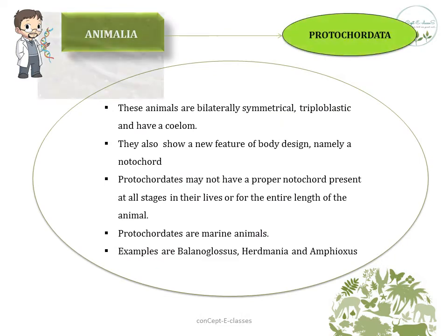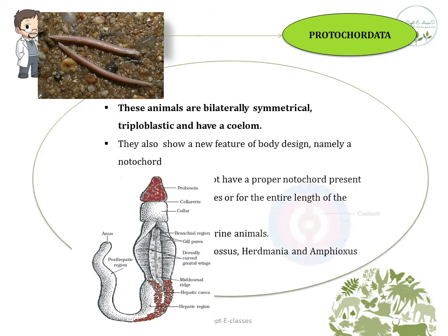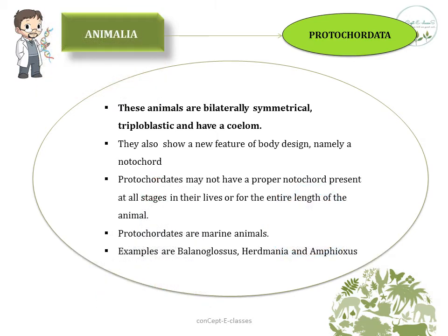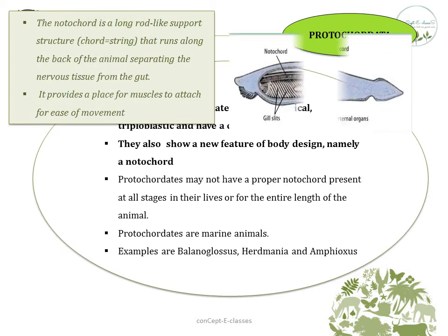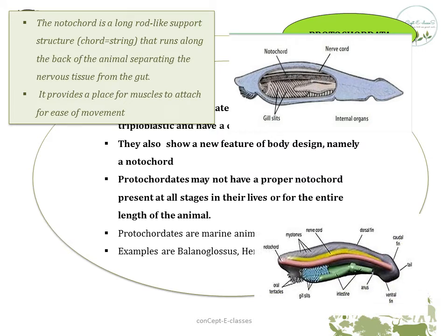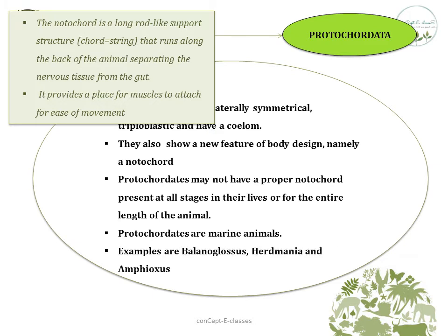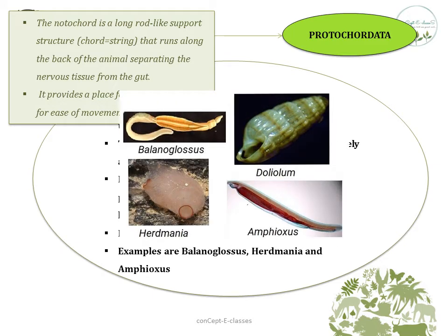The next division is Protochordata. Animals here are bilaterally symmetrical, triploblastic, and have a coelom. They show a new feature of body design called a notochord — a long rod-like support structure that runs along the back of the animal, separating the nervous tissue from the gut, and providing a place for muscles to attach for ease of movement. Protochordates may not have a proper notochord present at all stages of their lives. These are marine animals. Examples are Balanoglossus, Herdmania, and Amphioxus.